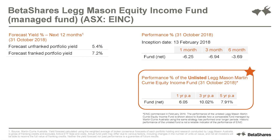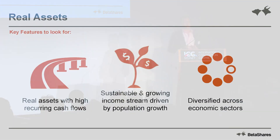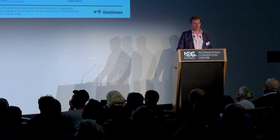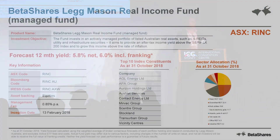Looking at the historical outcomes for investors: once again, the yield is 5.4% cash and 7.2% gross forecast. Moving on to the real income fund — RINC is the ticker in this instance. We're able to show a forecast yield here of 5.8% cash or 6% gross including franking.